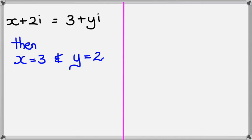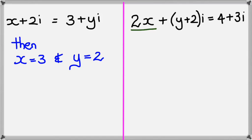Okay, so this is matching up real parts and imaginary parts. Let's have a look at a slightly different type of question, like this one here. If I was to say 2x plus y plus 2i equals 4 plus 3i, then what I do know is that the 2x is the real part, and in the complex number, 4 is the real part, which means 2x must equal 4, which means x is equal to 2.